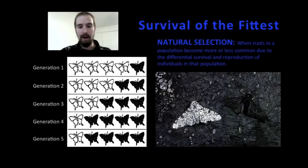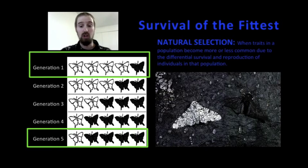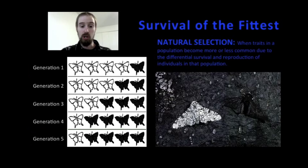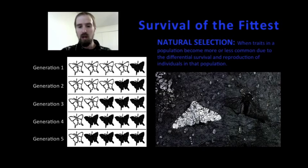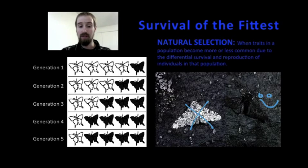Over the course of several generations, the population of peppered moths changed from one dominated by white Typica moths to one dominated by black Carbonaria moths as a result of natural selection. Natural selection is when traits in a population become more or less common due to the fact that these traits make an organism more or less likely to survive and reproduce. The white variation was selected against by the environment, while the black variation was selected for. Since fewer white moths were living to reproduce, there would be fewer white moths with each passing generation, while black moths passed on the genes for black coloration more frequently, and the black trait became more common with each passing generation.